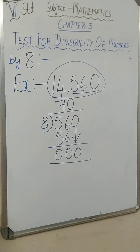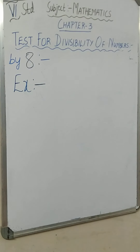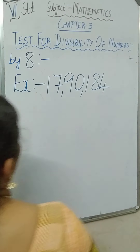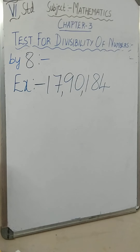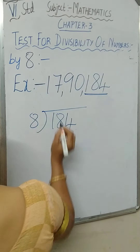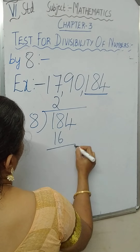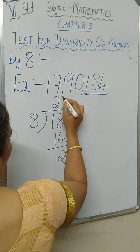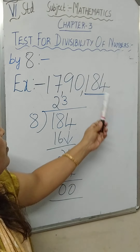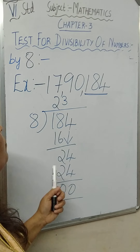Let us see another example: 17,90,184. The last three digits are 184. Instead of dividing the full number, we take only the last three digits and divide by 8. 8 twos are 16, what is remaining? 2. Then bring down 4. 8 threes are 24. So 184 is divisible by 8. Since 184 is divisible by 8, the full number 17,90,184 is also divisible by 8.